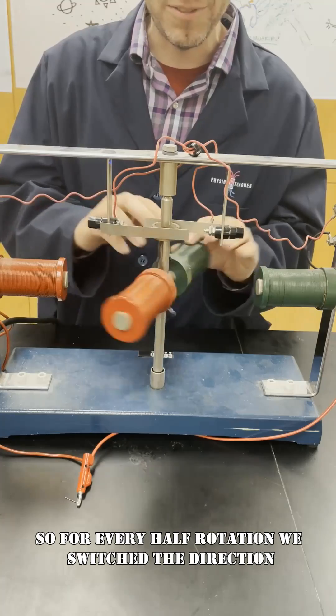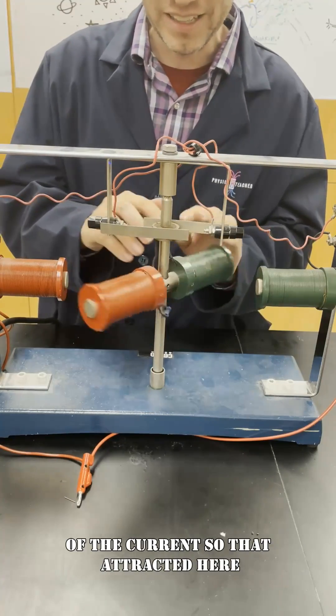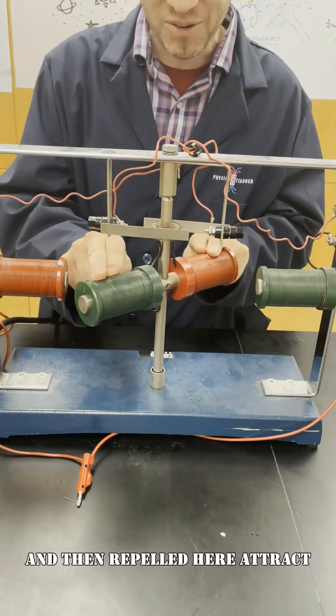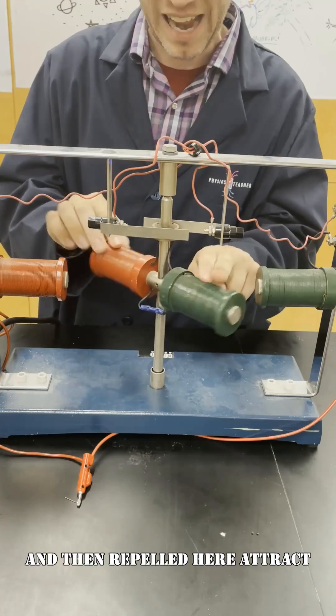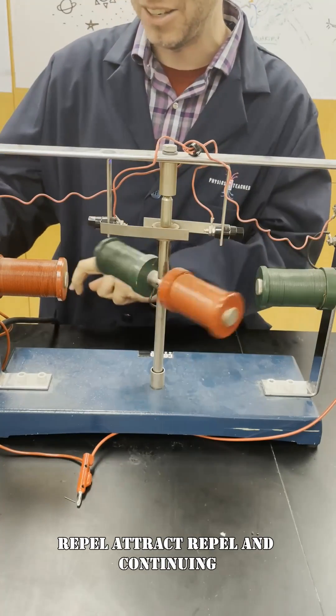So for every half rotation we switch the direction of the current so that attracted here and then repelled here. Attract, repel, attract, repel, and continuing.